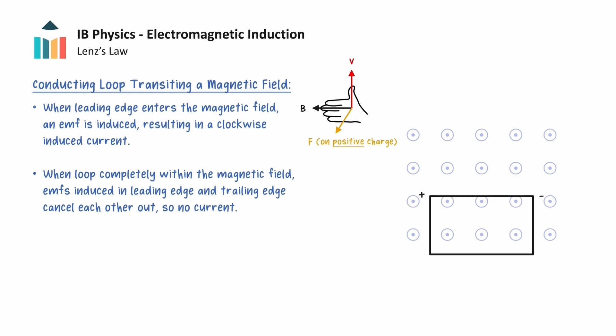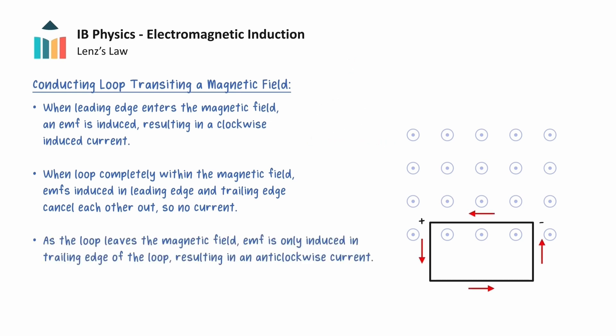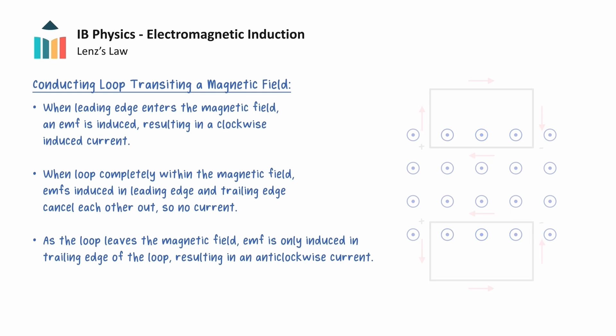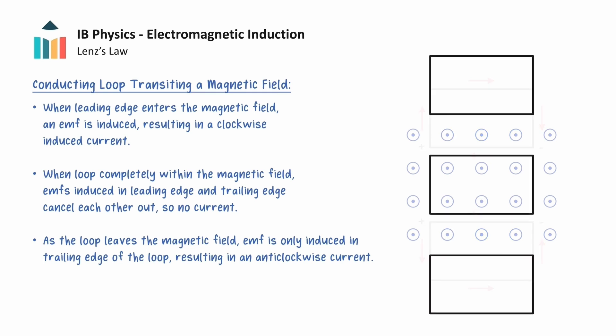However, as the loop exits the field, only the electrons in the trailing edge experience magnetic forces. This induces an EMF in the loop, but this now results in an anti-clockwise induced current around the loop, which is the opposite direction to when the loop enters the magnetic field. Notice how the times when a current has been induced in the loop, there has been a changing number of magnetic field lines passing through the inside of the loop. Conversely, when there is a constant or zero number of magnetic field lines passing through the inside of the loop, there has been no current. This observation is linked to a quantity called magnetic flux, and the current can only be induced when we have a closed loop of wire and the flux in the loop changes.